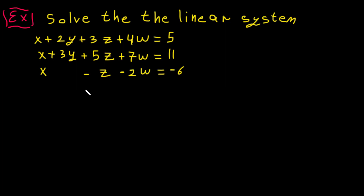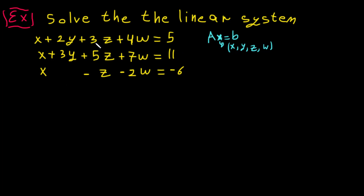Let's do an example for solving a linear system which has the form Ax = b. Here b is a vector, A is the coefficient matrix, and x represents the variables x, y, z, w written in bold. We want to solve this linear system. It's linear because the order of all variables equals 1. If a variable is missing, you can imagine it's multiplied by 0.